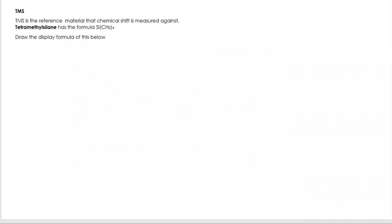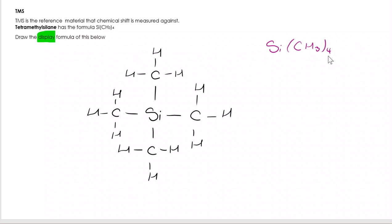TMS is tetramethylsilane, Si(CH3)4. This is used as the reference material, and that's really important to remember. This is a one marker that comes up a lot. You're asked for the display formula here. The key here is it's display - every bond had to be shown.